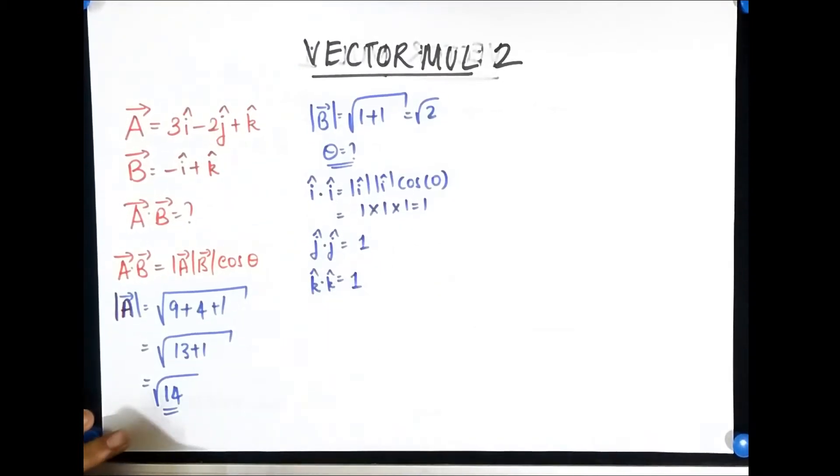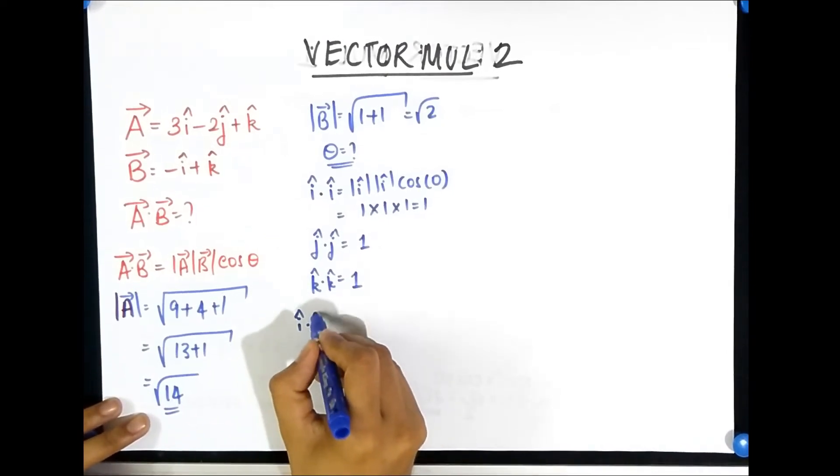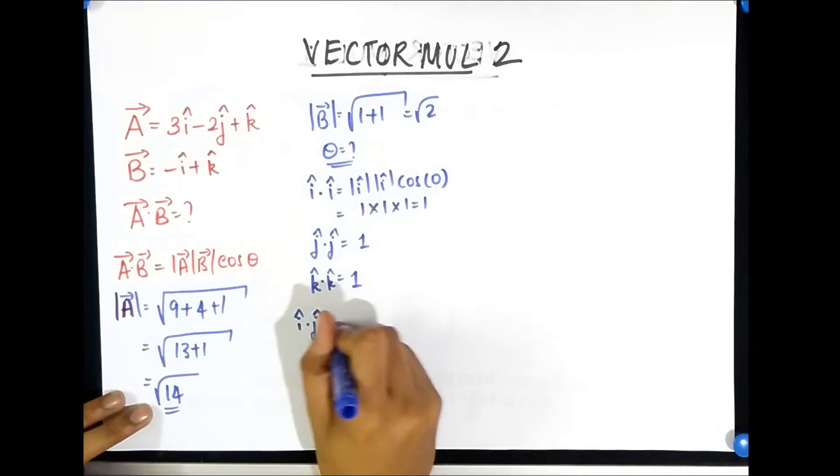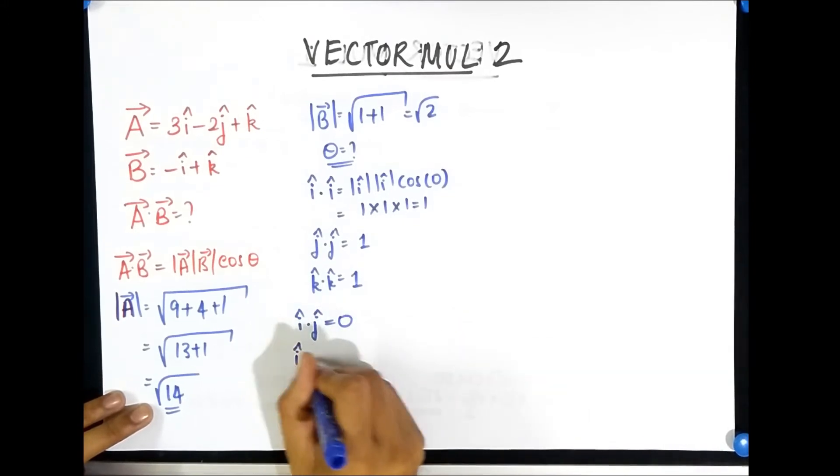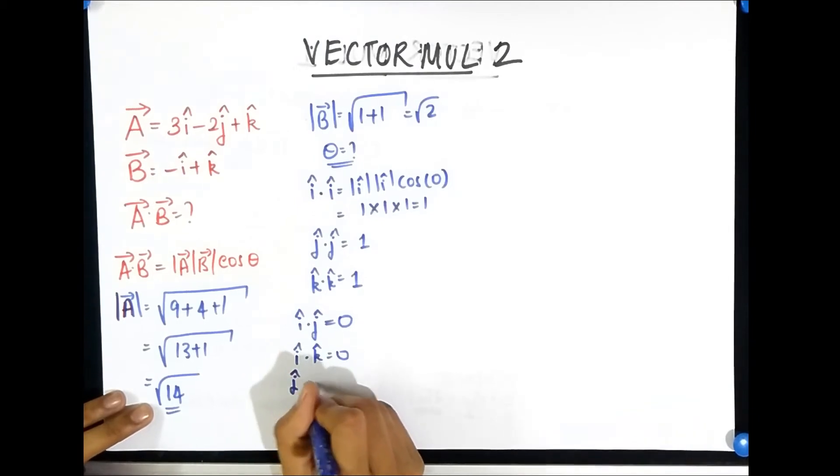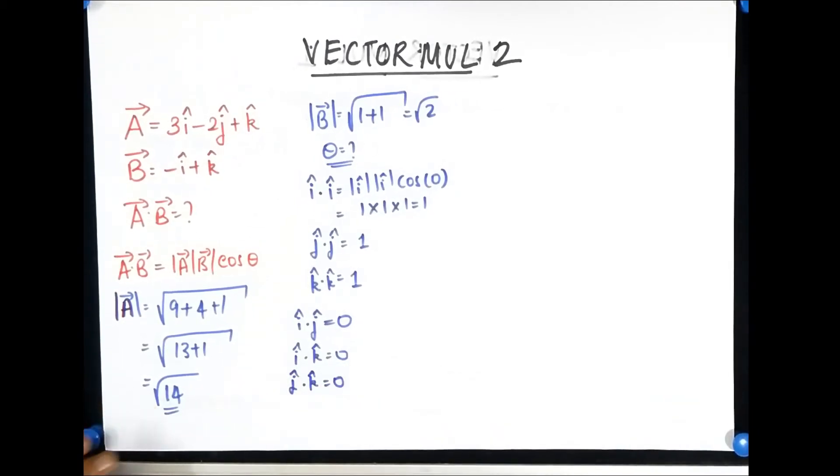What happens if you did i cap dot j cap? Well i cap is along the x, j cap is along the y, angle is 90 degrees and remember dot product is all about parallelism, so when you have perpendicular vectors dot product is zero. So i cap dot j cap is immediately zero, i cap dot k cap is also zero, j cap dot k cap is also zero.